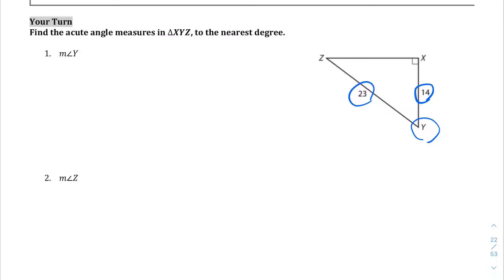So, if we remember, SOHCAHTOA, right? So, which one of these, sine, cosine, or tangent, deals with the adjacent over the hypotenuse? Well, if you investigate a little bit, you'll see that the cosine is the one that deals with the adjacent and the hypotenuse.